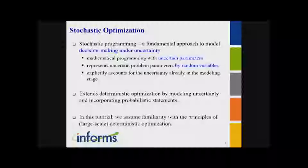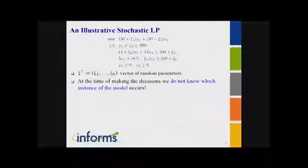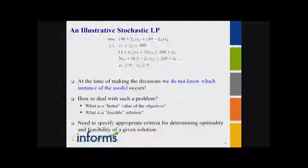The underlying framework is based on standard optimization methods. Let me start with a very small illustrative stochastic LP. As you can see, there are random parameters in the objective function and the left and right sides of the constraints. At the time of making the decision, we don't know which realizations will occur, which means we don't know what the instance of the model will be.